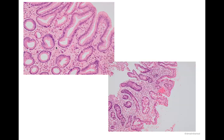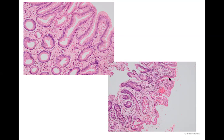This is a gastric antral biopsy showing normal foveolar lining. In contrast, this biopsy from the antrum shows the presence of goblet cells scattered within the lining epithelium — this is what we call intestinal metaplasia. If we are finding intestinal metaplasia, we know that we are dealing with gastric atrophy.